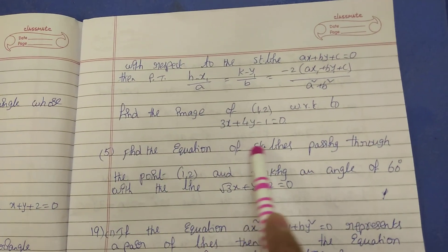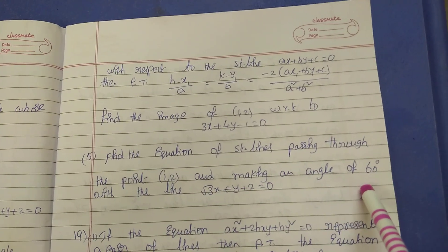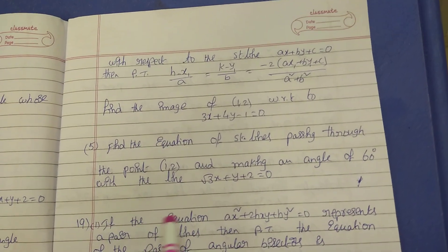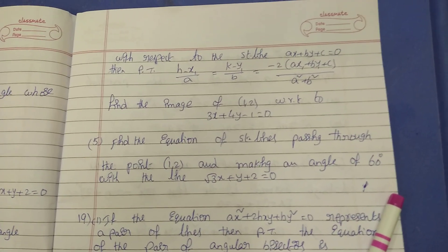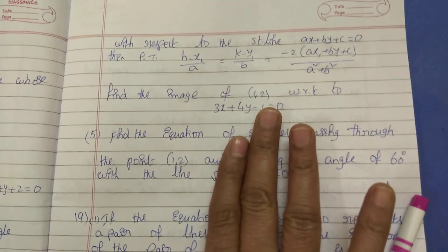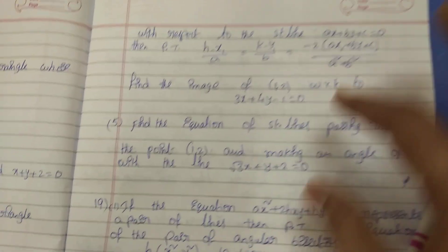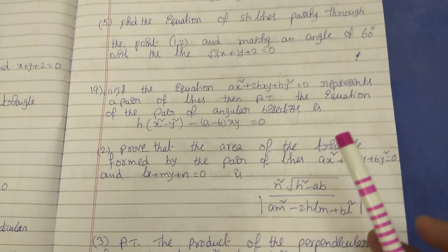And one question: find the equation of the straight line passing through the point 1,2 and making an angle 60 degrees with the line root 3X plus Y plus 2 equal to 0. This one also I uploaded. And then in 18th bit, 5 questions, you have to prepare first. You have to prepare E5, then compulsory. Then you will get easily 1, 7 mark.